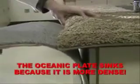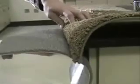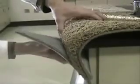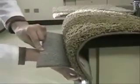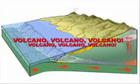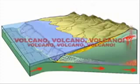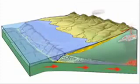Transform fault boundaries occur when two plates rub or slip past one another. Faults are cracks in the earth. Earthquakes shake the land when the rocks move along a fault. The San Andreas fault in California is an example.